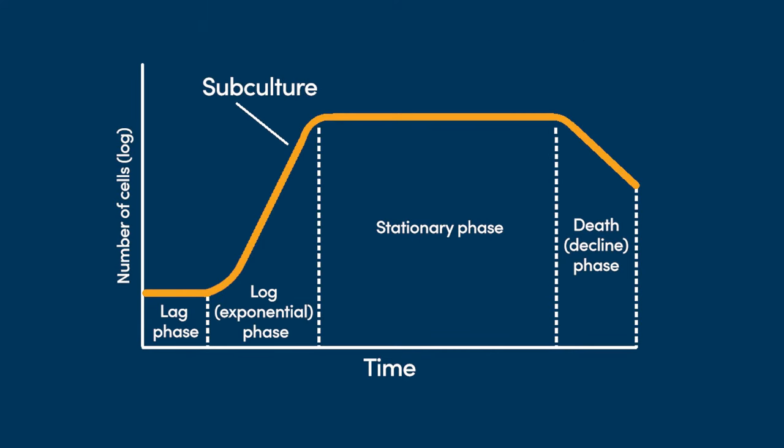There are some experimental models where you would want a confluent monolayer, but if you are maintaining and expanding a cell line, most of the time you'll be splitting at sub-confluency. In both suspension and adherent cell culture, the goal is to maintain log phase growth by splitting cells before they deplete nutrients, get stressed, or become contact inhibited.